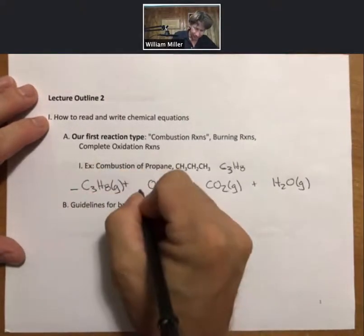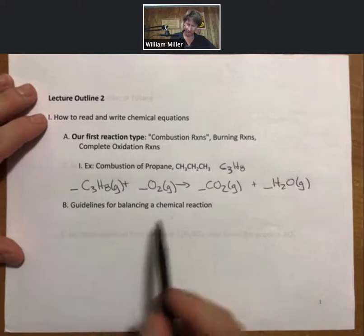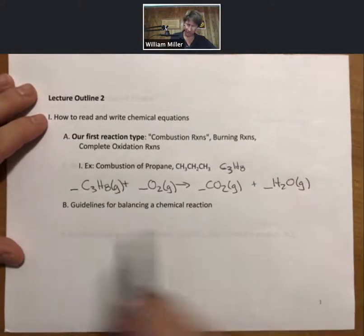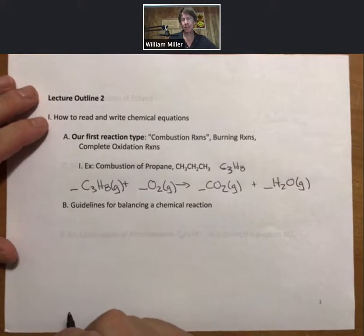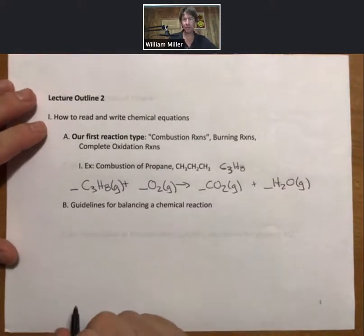Now we need to figure out this is not balanced as written. You can see there are different number of H's, different number of O's, different number of C's. And so I'm going to put lines in front for the coefficients.